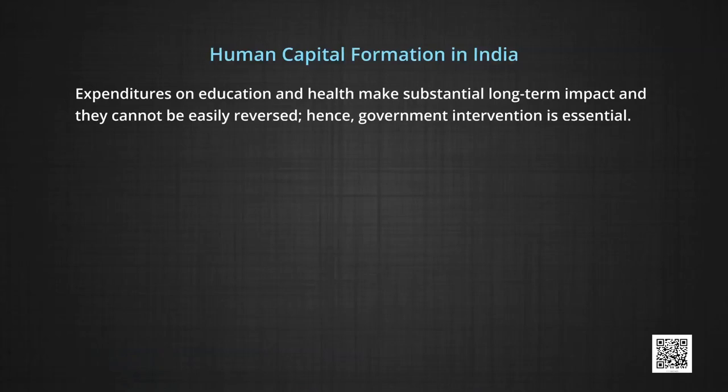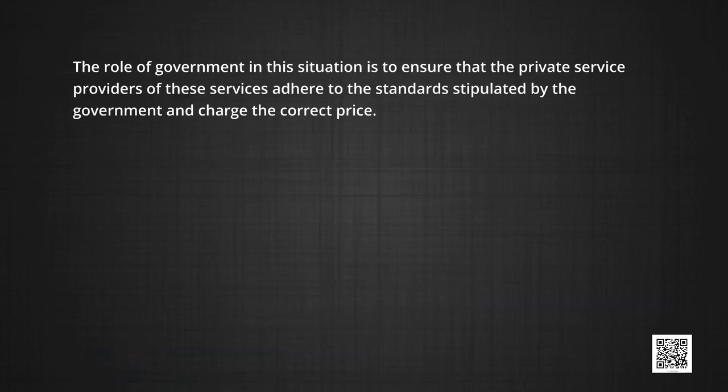It is well known that education and health care services create both private and social benefits, which underlines the need for public investment in education along with private investment. Expenditure on education and health makes substantial long-term impact and cannot be easily reversed. Hence, government intervention is essential. For instance, once a child is enrolled in a school or admitted to a health care centre where required services are not provided, substantial damage would have already been done before a decision is taken to shift the child. Moreover, individual consumers do not have complete information about the quality of services and their cost. In this situation, providers acquire monopoly power and are involved in exploitation. The role of government is to ensure that private service providers adhere to standards stipulated by the government and charge the correct price.